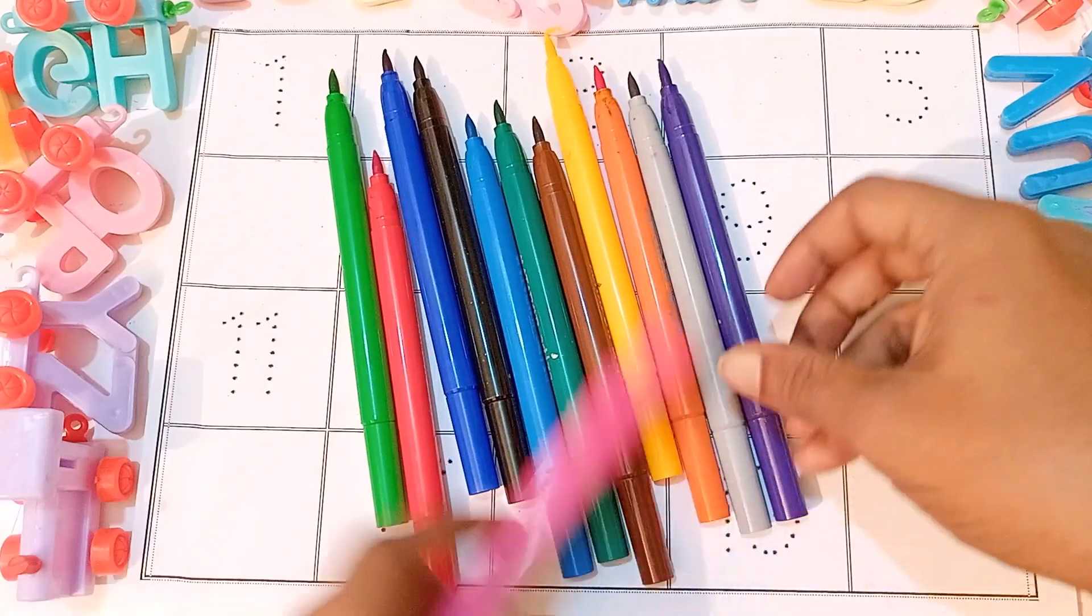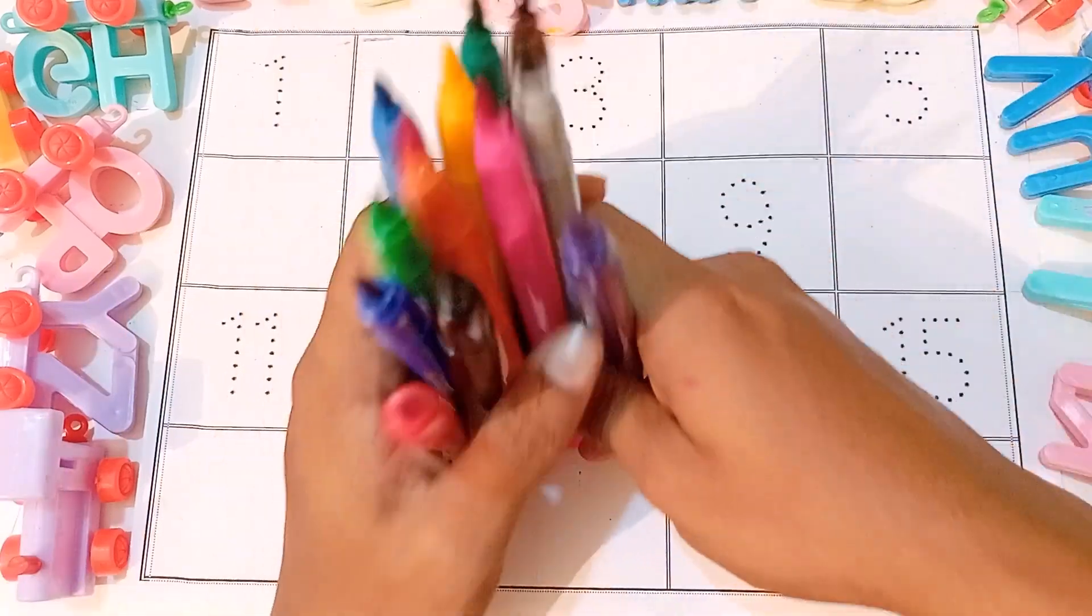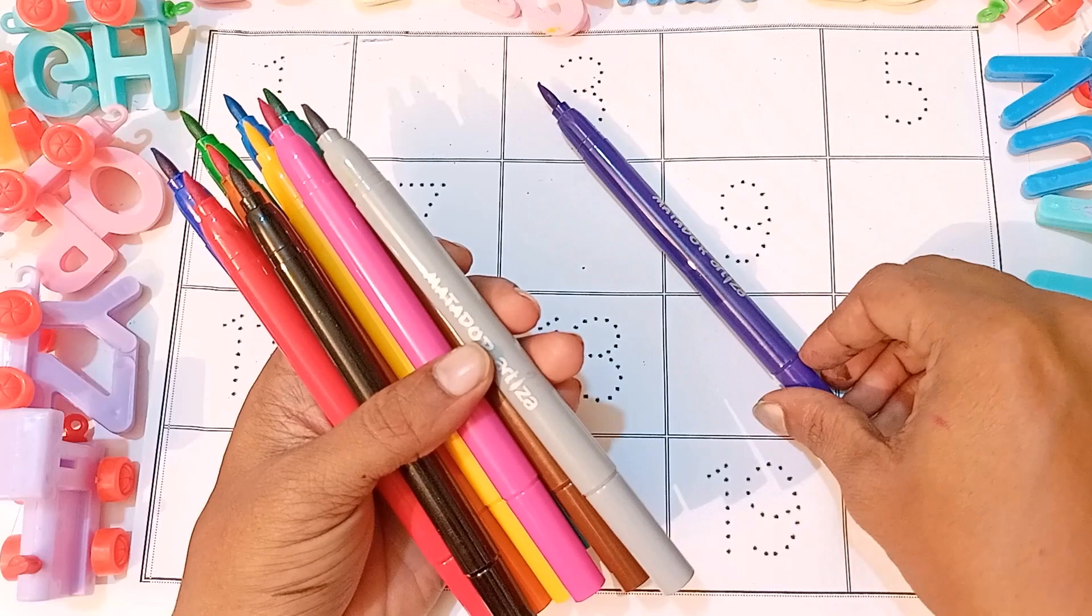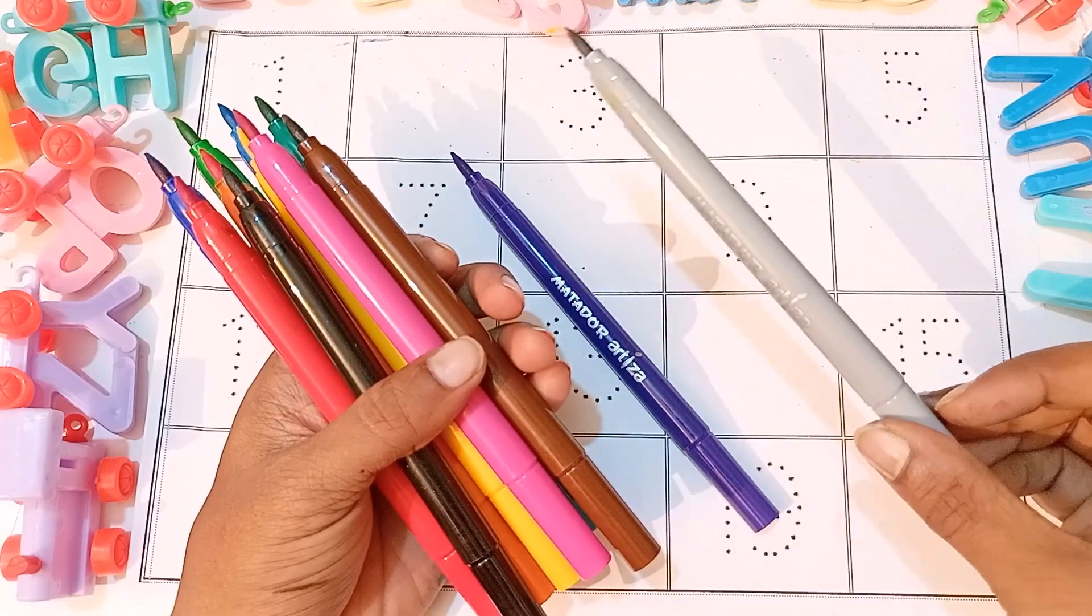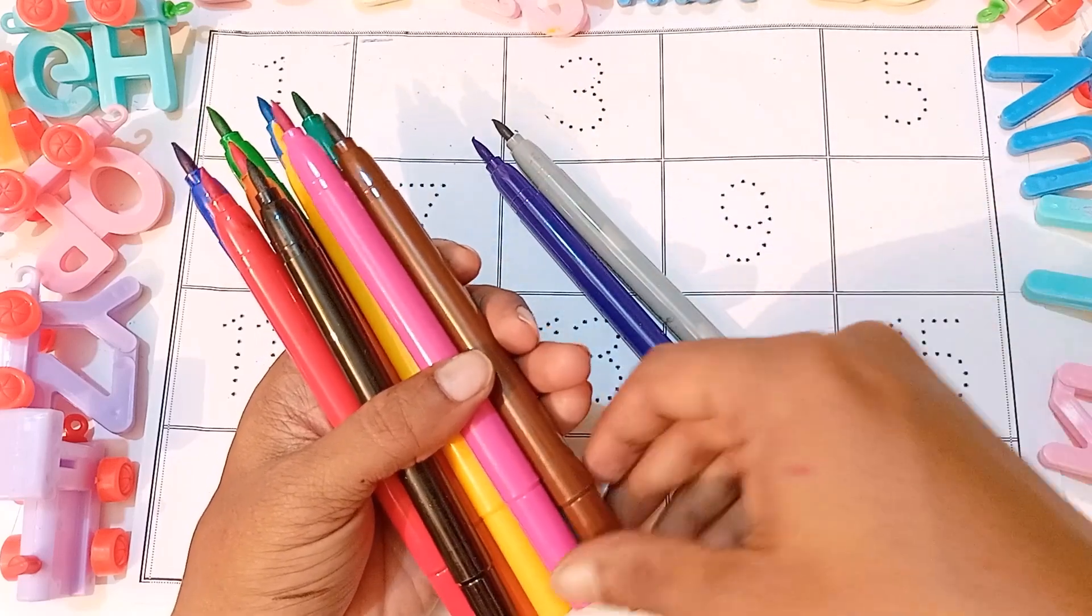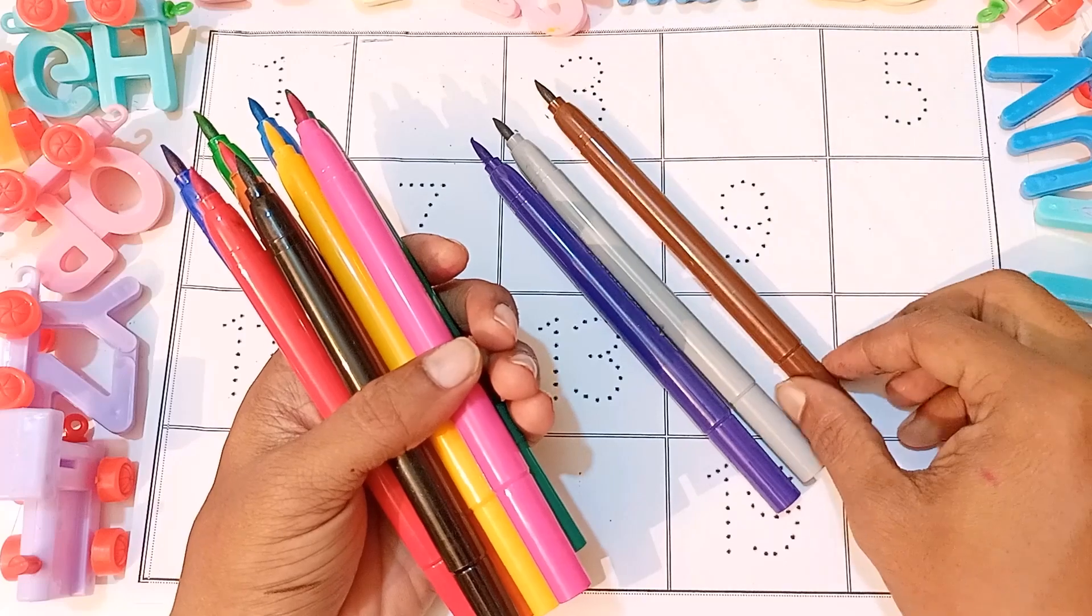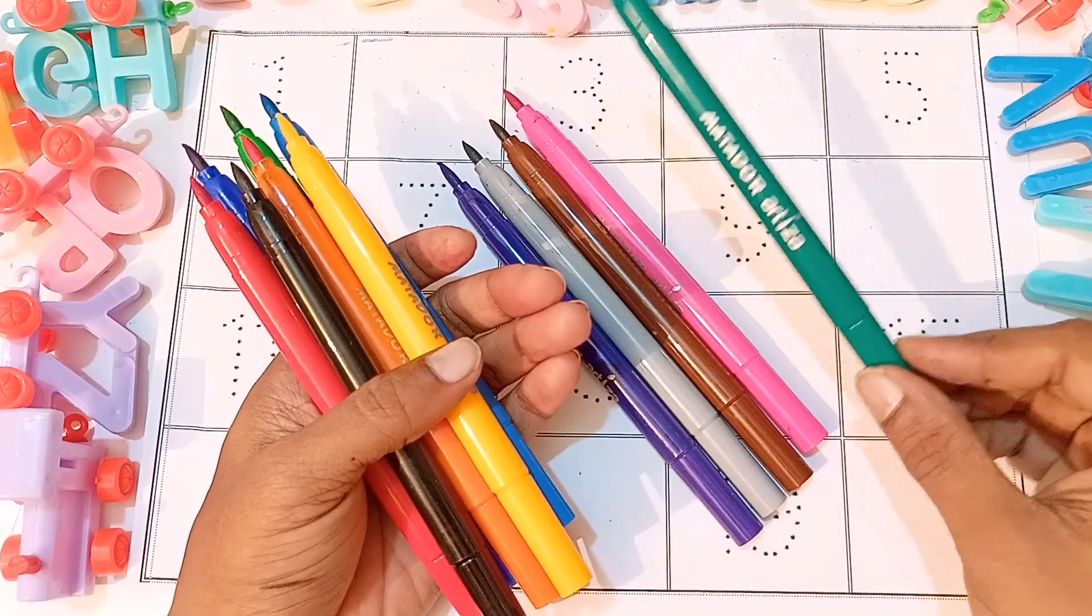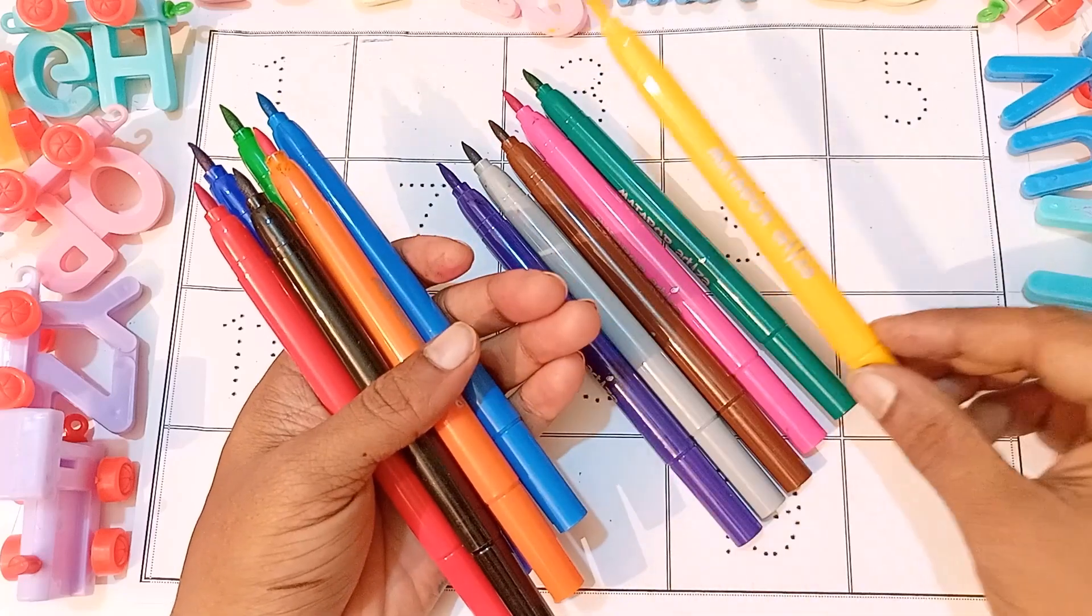Color paint, color names. Purple color, light pink color, silver color, brown color, pink color, blue, green color, deep green color, yellow color, sky blue color, orange color.